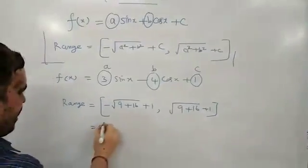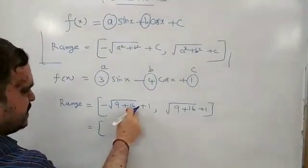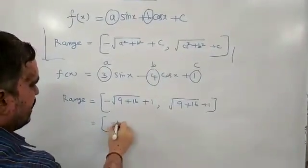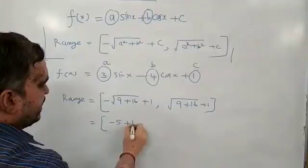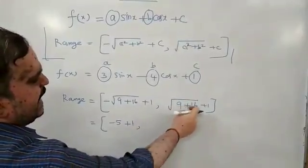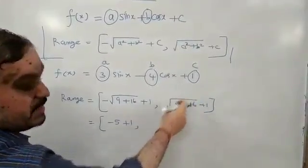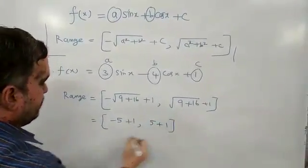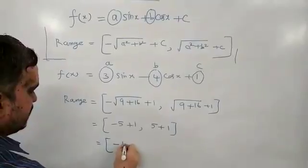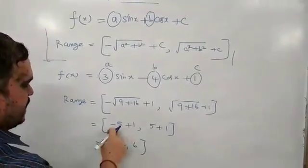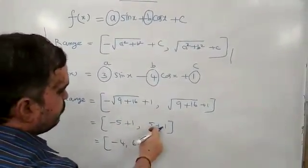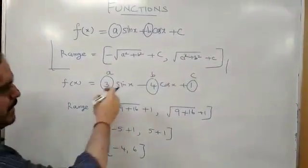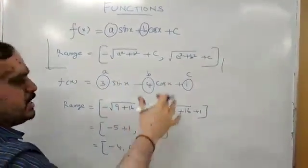Square root of 9 plus 16 equals square root of 25, which equals 5. So we get -5 plus 1 equals -4, and 5 plus 1 equals 6. Therefore the range is [-4, 6]. This is the range for the given question.